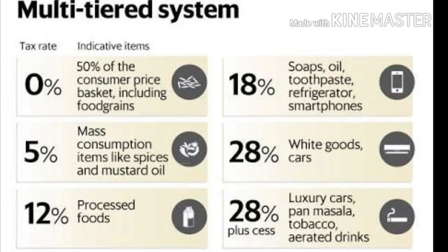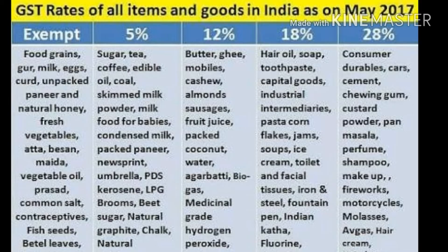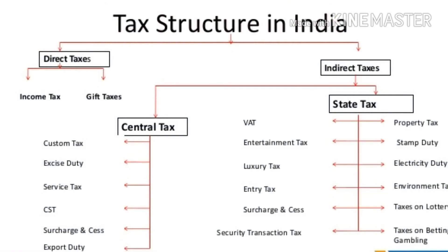Automobiles: Two-wheelers with engine size below 350cc, some categories of commercial vehicles including three-wheelers, and SUVs will get cheaper under GST, though the tax impact varies from segment to segment. Restaurants: Small restaurants will also cost less after implementation of GST, as they have been placed in the five percent tax bracket. Household items: Kitchen items like pressure cookers and pans will get cheaper as they will be taxed at 12 percent under GST, much less than the current rate of around 19.5 percent.